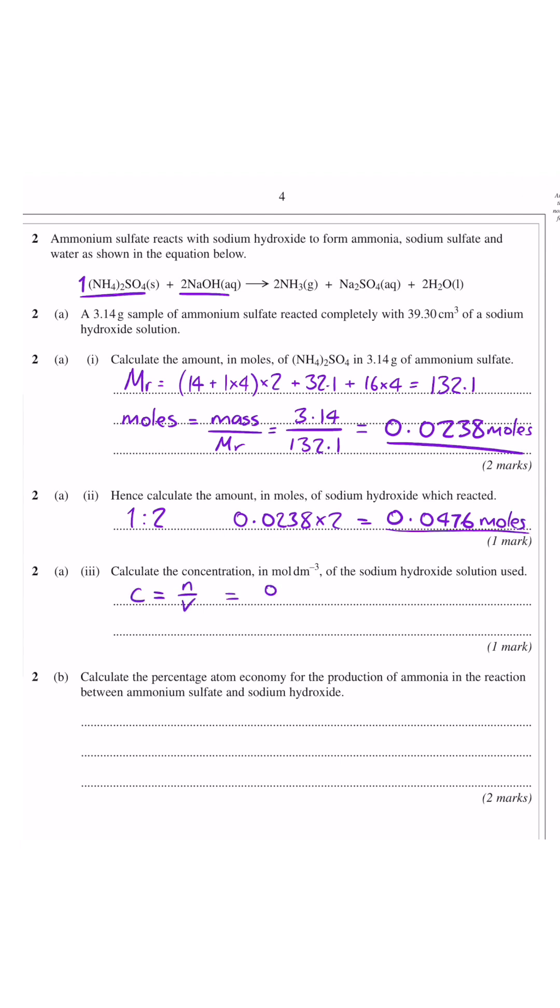For part 3 you want to use the equation concentration equals moles over volume. So 0.0476 divided by 39.3 over 1000 to convert it into dm cubed and that gives 1.21 moles per dm cubed.